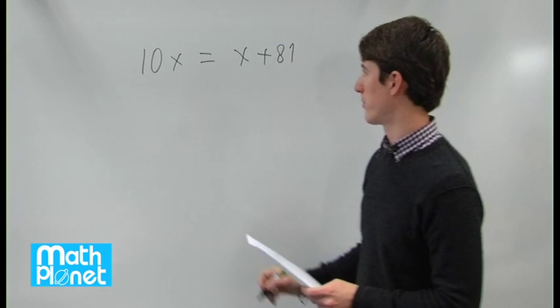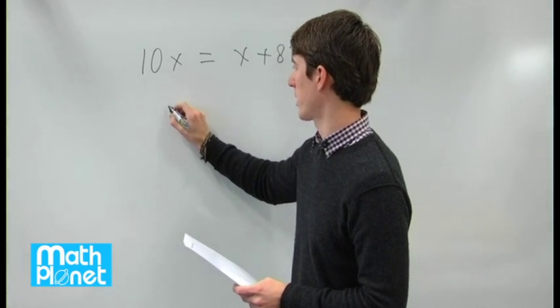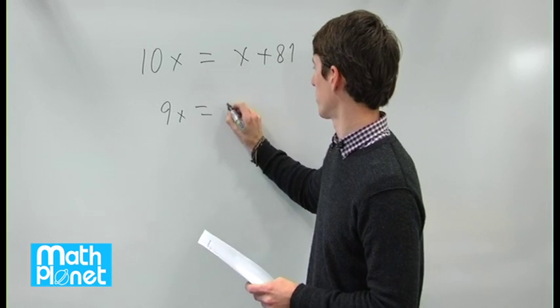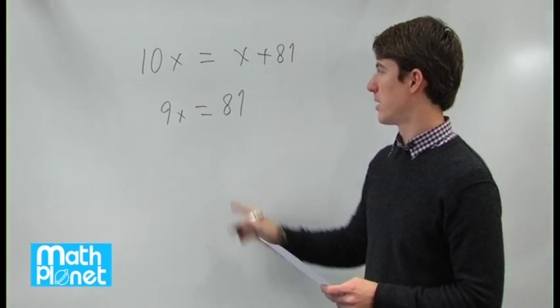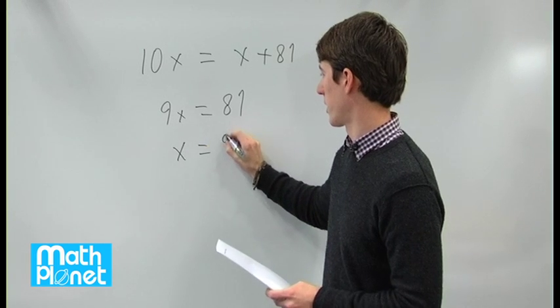So let's start by solving for x. We can subtract x from both sides and we get 9x equals 81. Then we can divide by 9, x equals 9.